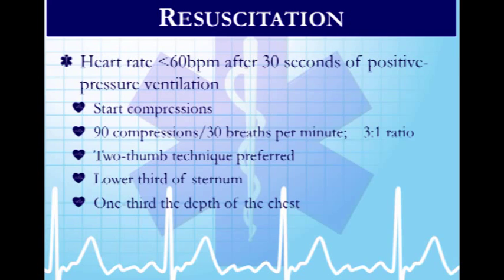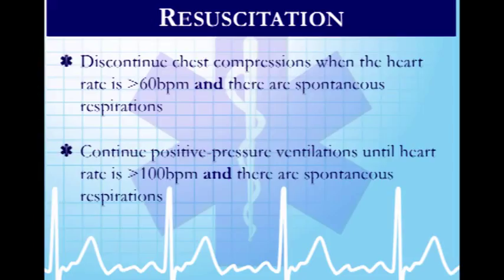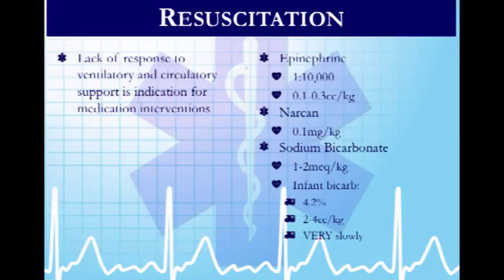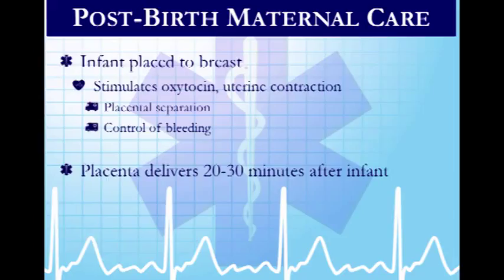If heart rate is less than 60 after 30 seconds of ventilation, per PALS, start chest compressions: 90 compressions and 30 breaths per minute using the two-thumb technique. Once heart rate exceeds 60, stop compressions. Continue ventilation until heart rate improves to over 100. If drugs are required, consider epinephrine or Narcan if the situation warrants it. Also monitor blood glucose, as newborns have very high metabolic demands.